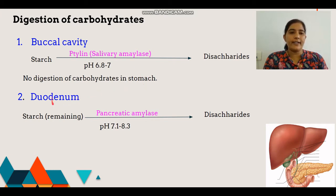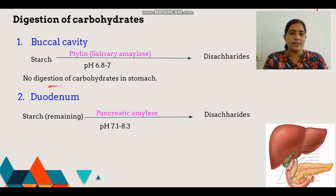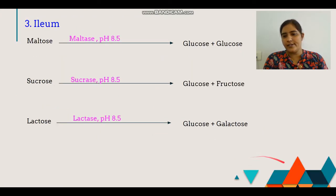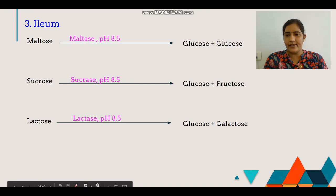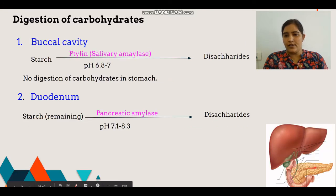Then food enters the small intestine, which has three parts: duodenum, jejunum, and ileum. Duodenum is the first part of the small intestine. As you can see in this diagram, a C-shaped structure is called the duodenum.